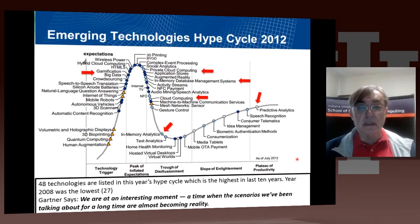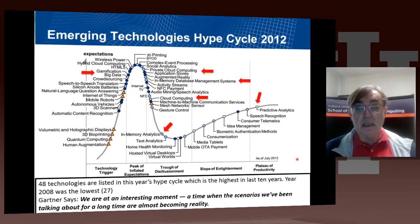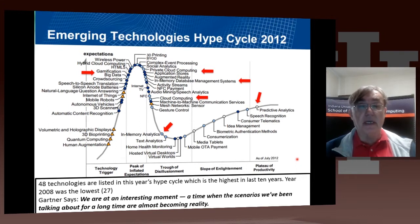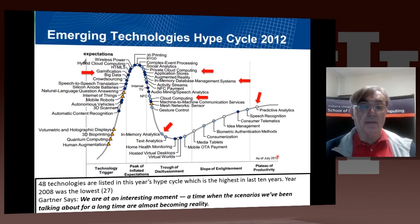In 2012 there were 48 technologies listed, compared to 27 in 2008. Gartner notes that we're at an interesting moment — a time when the scenarios we've been talking about for a long time are almost becoming reality. Clouds and big data, and other technologies on this list, are rapidly evolving and turning into reality rather than just climbing the technology-triggered mountain of inflated expectations.